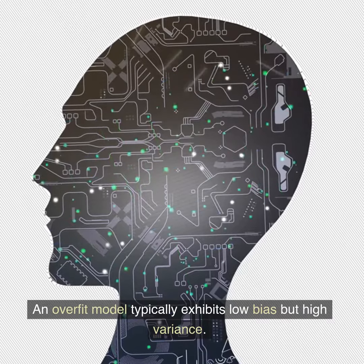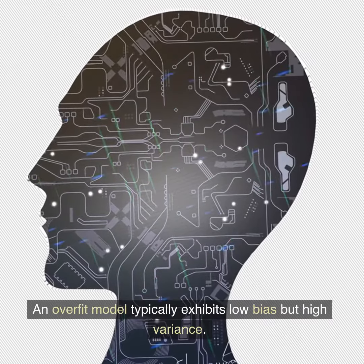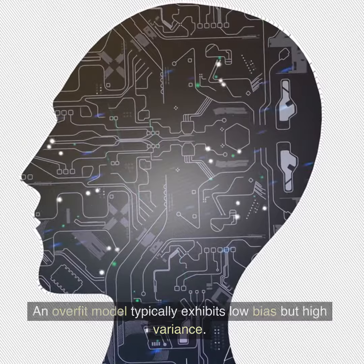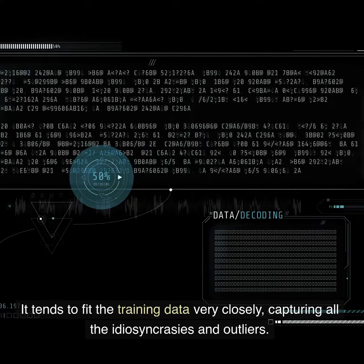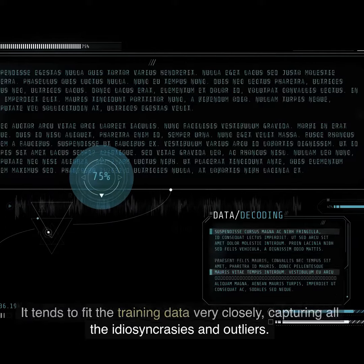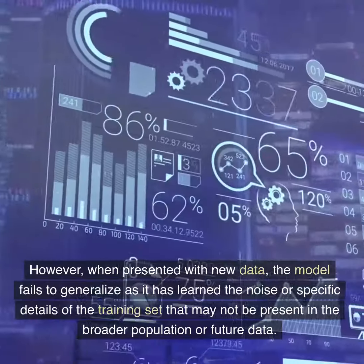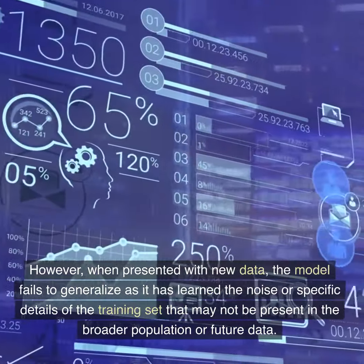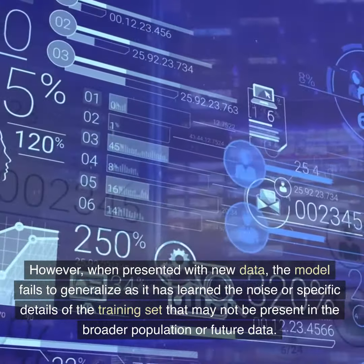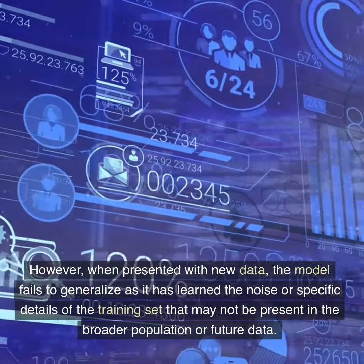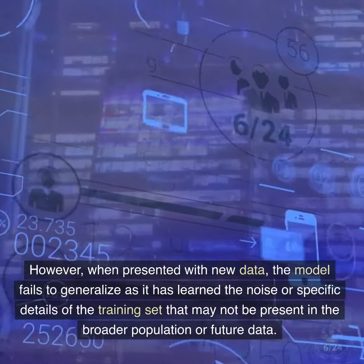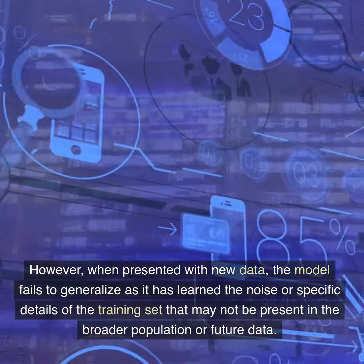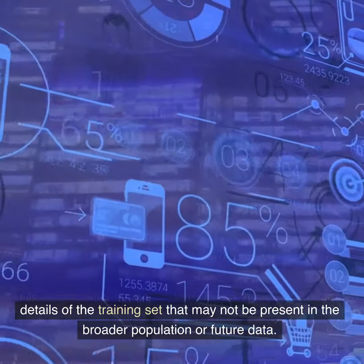An overfit model typically exhibits low bias but high variance. It tends to fit the training data very closely, capturing all the idiosyncrasies and outliers. However, when presented with new data, the model fails to generalize as it has learned the noise or specific details of the training set that may not be present in the broader population or future data.